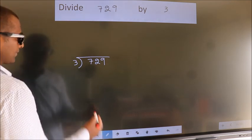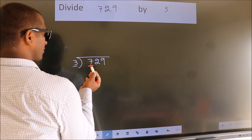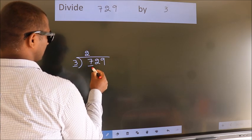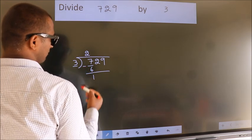Next, here we have 7, here 3. A number close to 7 in 3 table is 3 times 2 is 6. Now we should subtract. We get 1.